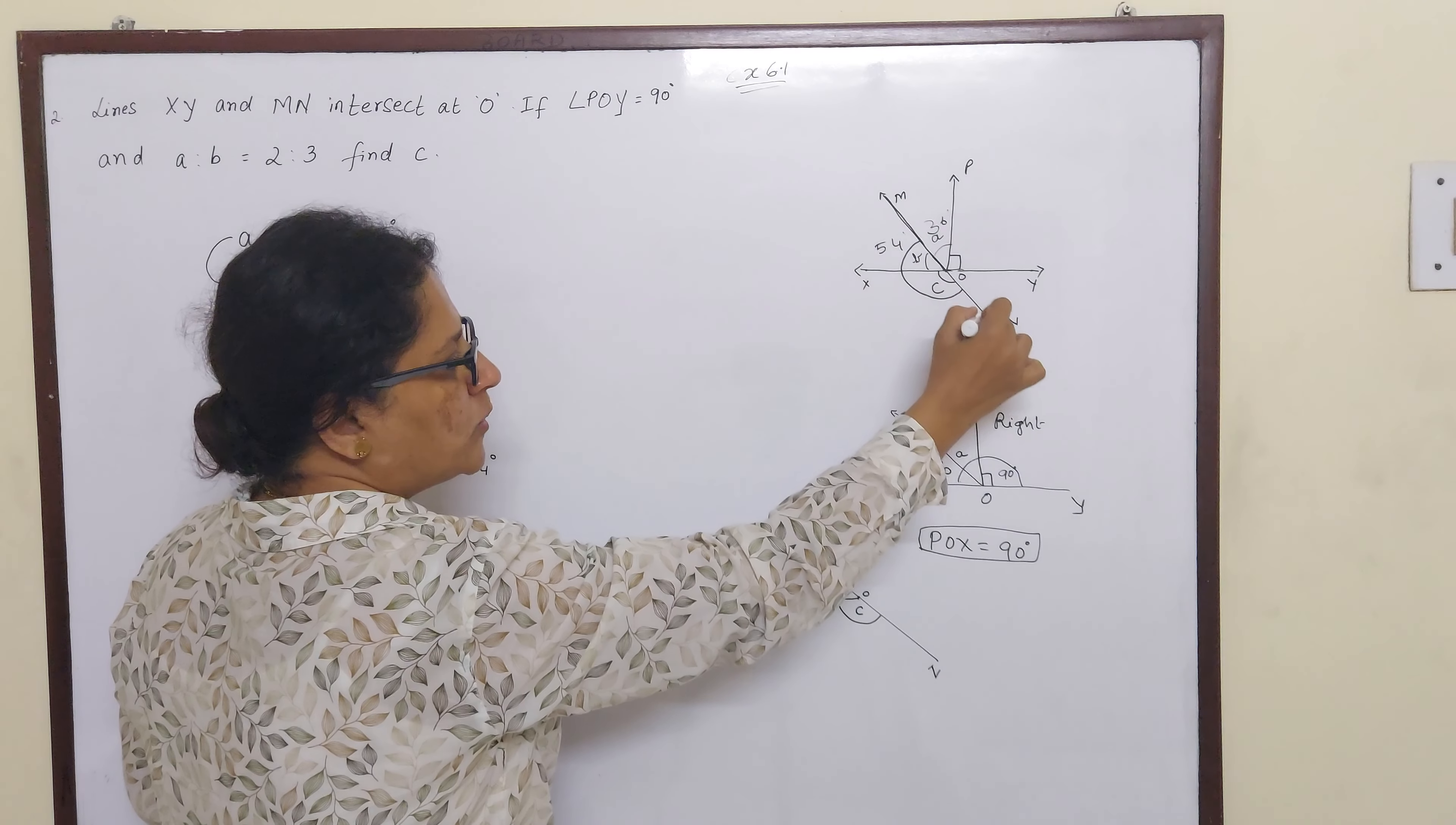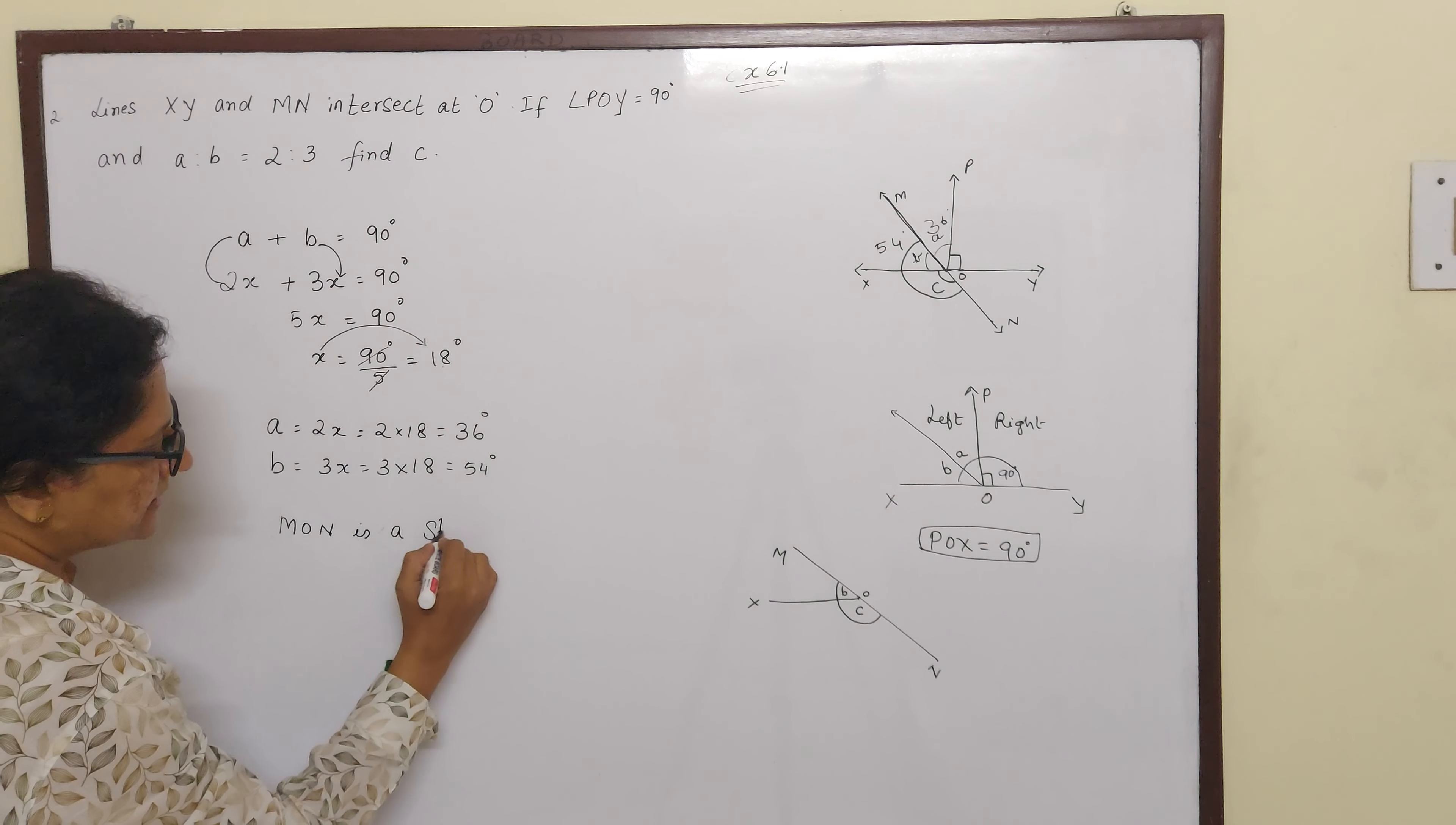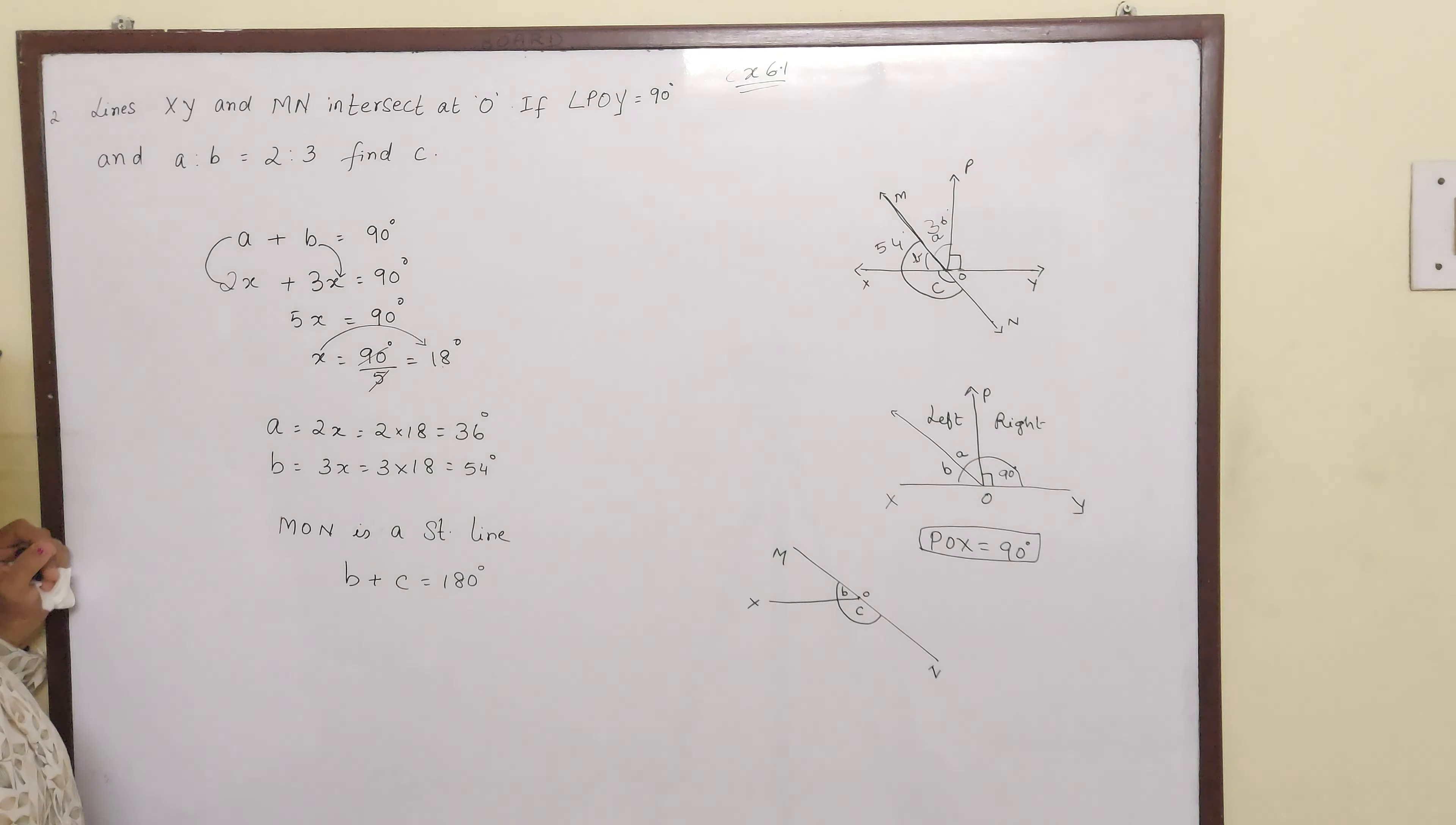Because M, O, N is a straight line. So as M, O, N is a straight line, you can say B plus C is also 180 degrees.